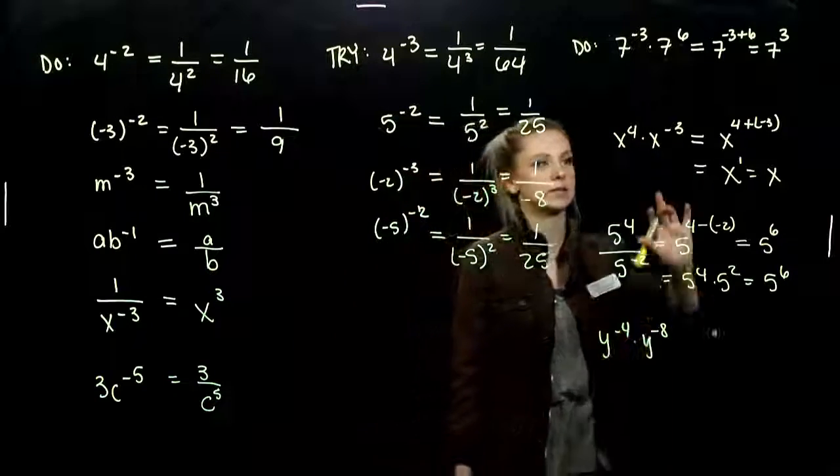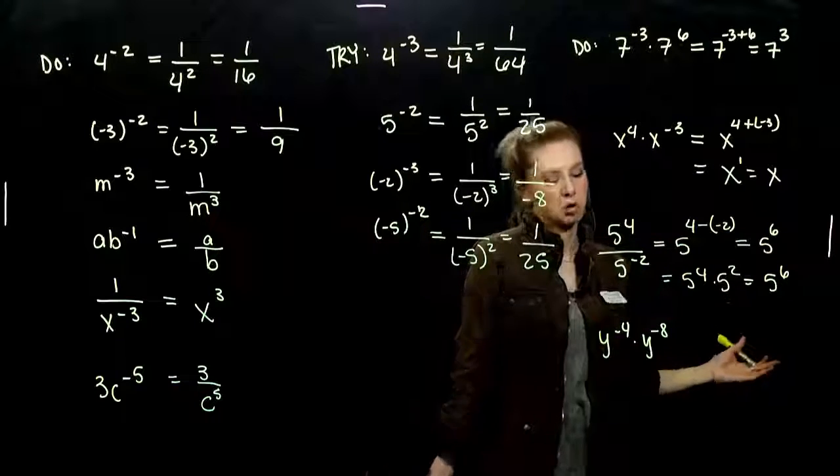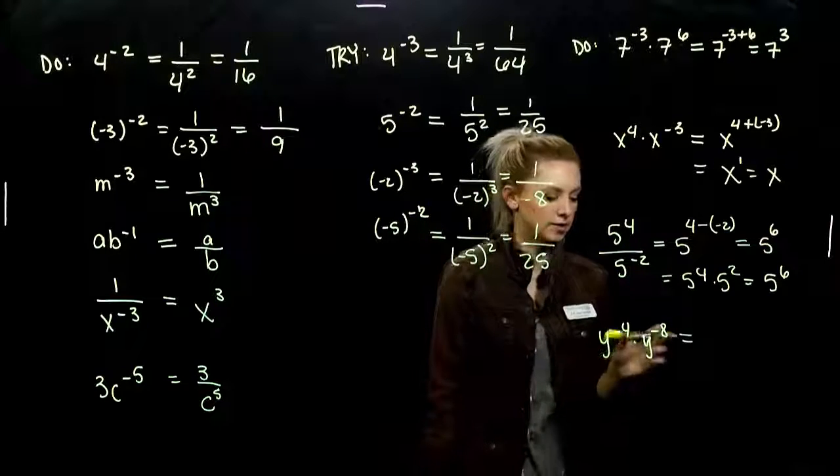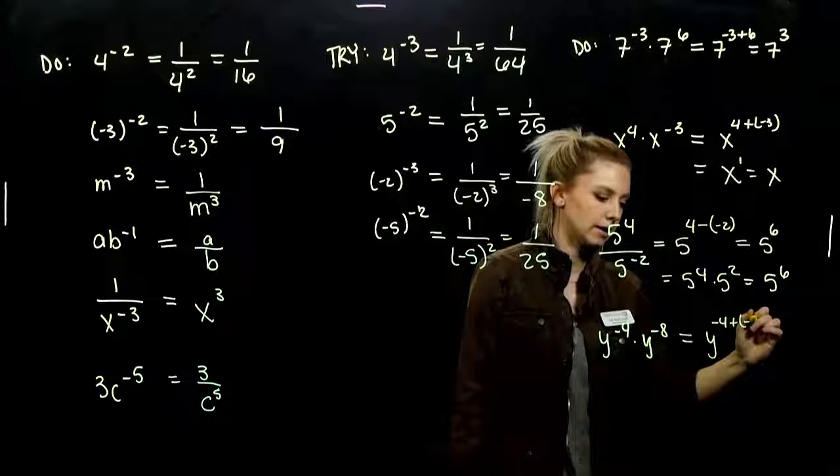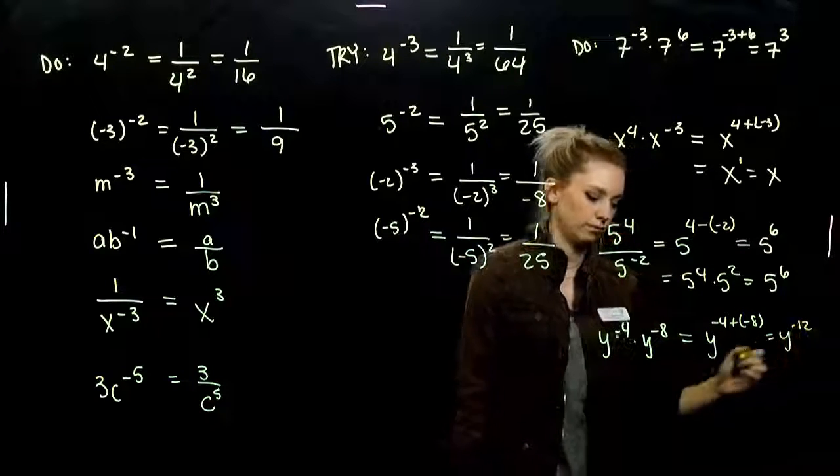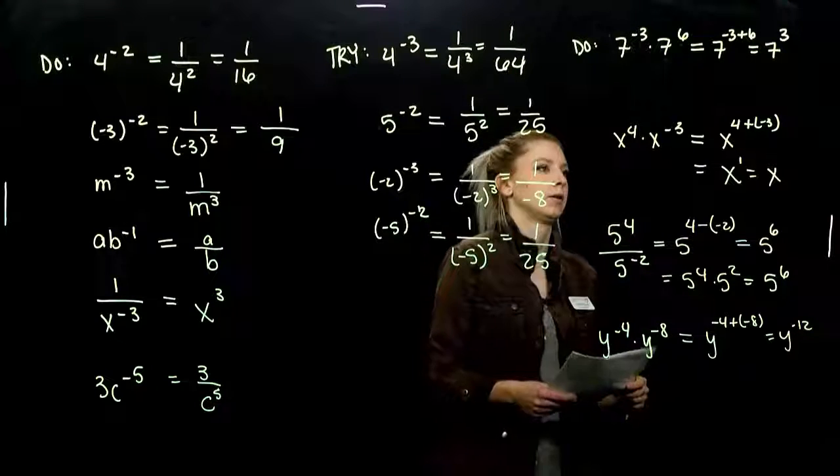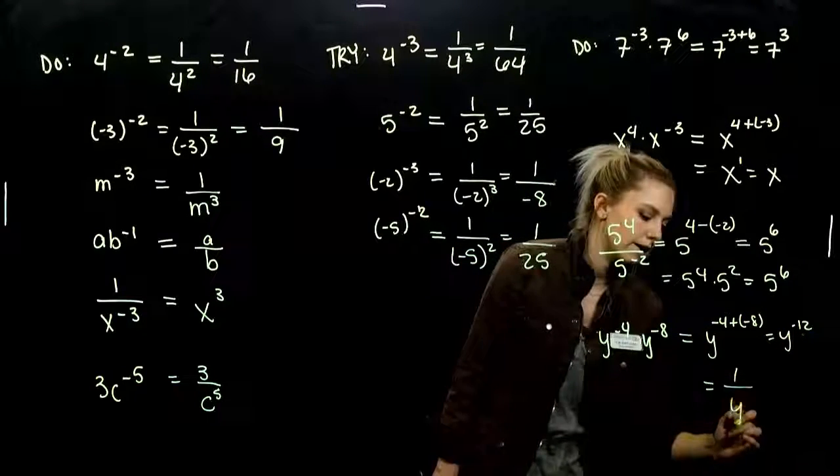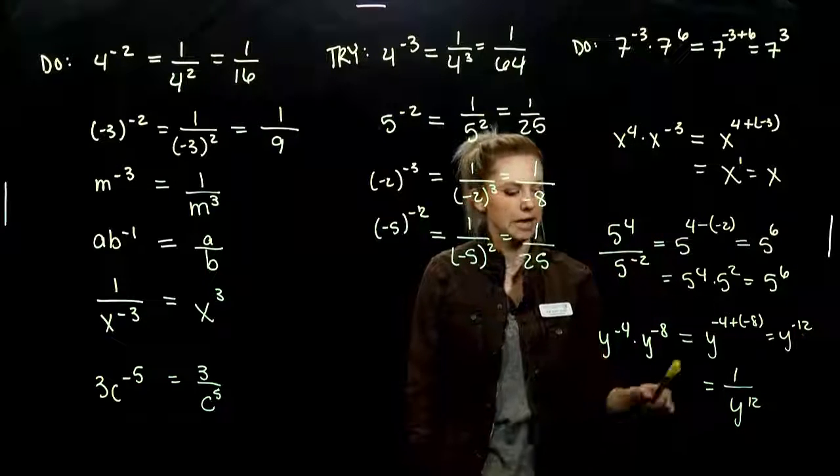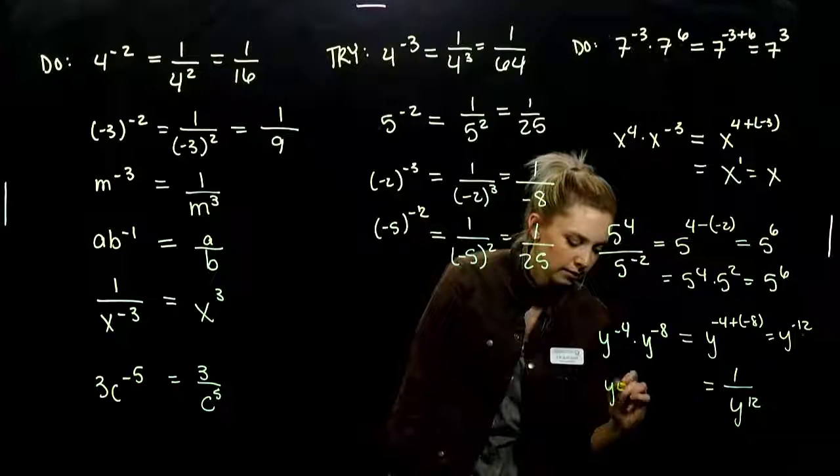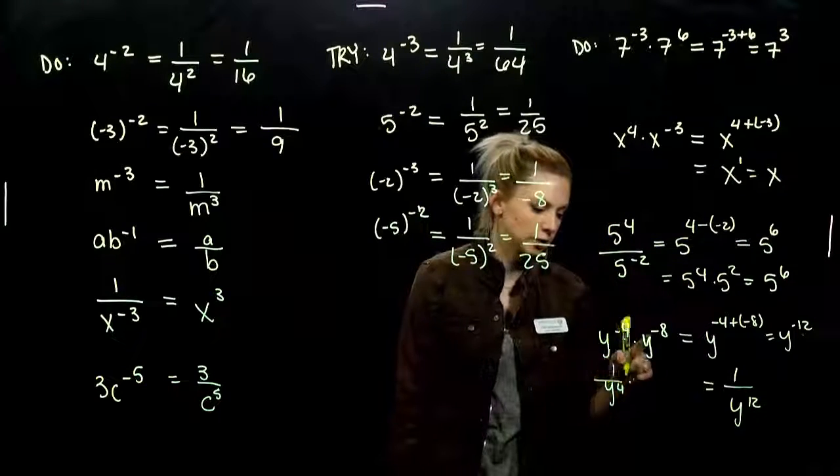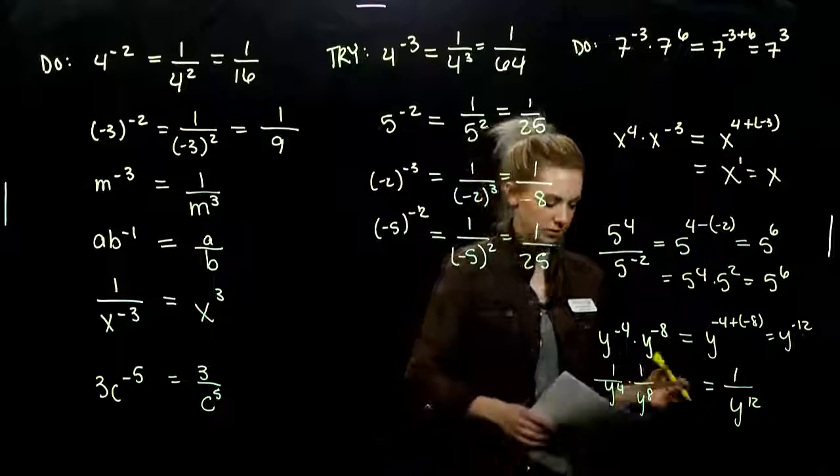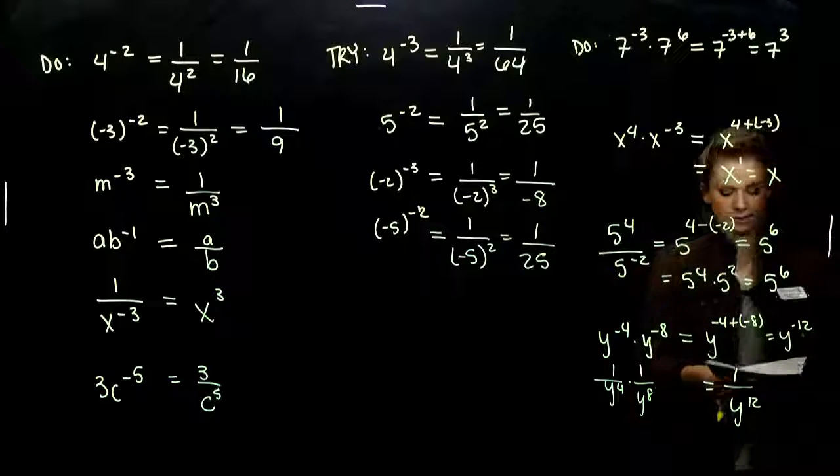And, last one, same base being multiplied, so we add the exponents together. We've got negative 4 and a negative 8. Together it will give me negative 12. Same story if we, well in the end, we want to write it with a positive power. So what's it going to look like? 1 over y to the 12. Or we could have started off in the beginning and said, how do I rewrite this term with a positive power? 1 over y to the 4th. And then multiplying by 1 over y to the 8th. Same base down below, multiply, so we add those powers. Still get the same result. So we always want to write those with positive exponents in the end.